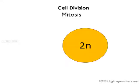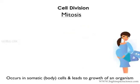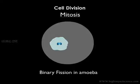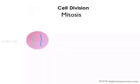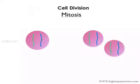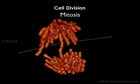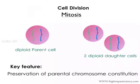Mitosis. Mitotic division occurs in body cells or somatic cells and leads to growth of an organism by increasing the number of cells. It is also the cell division that occurs during binary fission. During mitosis, the parent cell divides into two daughter cells, each having the same number of chromosomes as the parent cell. It is the process of dividing the replicated DNA of the cell into two nuclei. Therefore, the key feature of mitosis is the preservation of the parental chromosome constitution.